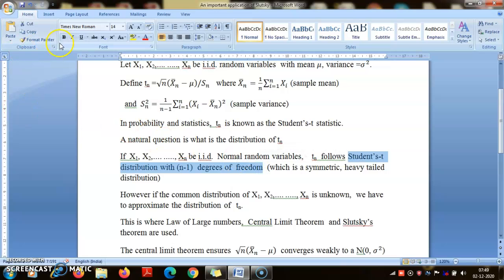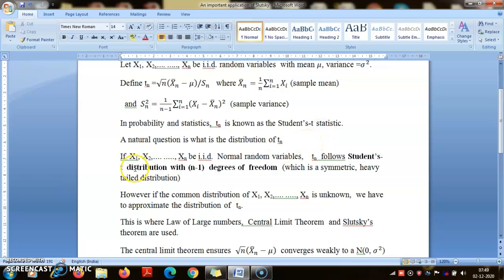Student's t distribution is a symmetric, heavy-tailed distribution that we had discussed earlier. It is symmetric in the sense that if X follows Student's t, so does -X. But it does not have all moments; μ is a parameter, the degree of freedom. For Student distribution, you will have moments up to μ but not beyond μ.